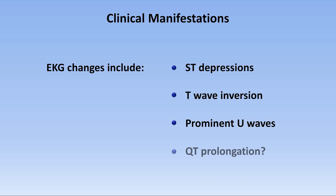Many sources report QT prolongation as another consequence of hypokalemia, but the most authoritative sources suggest this is erroneous. The confusion arises for two reasons. First, when U-waves become prominent, there can be fusion of the T and U-waves, and when measuring the QT interval, one can inadvertently measure the Q-U interval instead, which will necessarily be longer. The second reason is that hypokalemia is particularly dangerous when superimposed on pre-existing QT prolongation, which is independent of the electrolyte disorder.